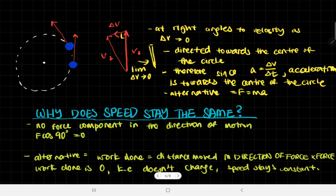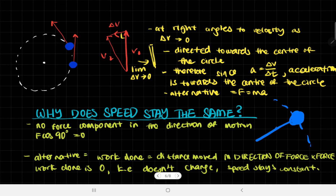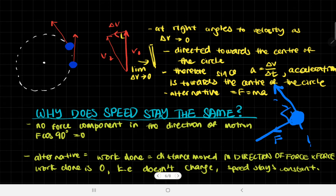Why does speed stay the same? How is it possible that speed stays the same while there is an acceleration or resultant force? We can prove there is no force component in the direction of motion. This is the force towards the center, at right angles to the motion. This force has no component at all in the direction of travel - we can prove this using F cos 90 = 0, because cos 90 equals zero. This is 90 degrees. If the force were angled differently, we could resolve it into components in both directions. However, it's not - it has zero component in the direction of motion.